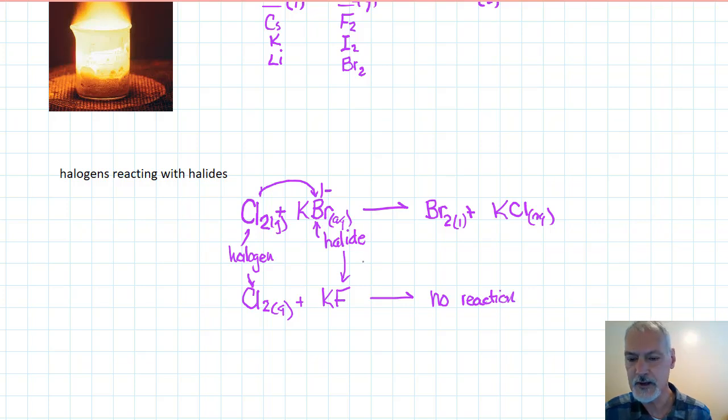Well, why is it sometimes they react and sometimes they don't react? The secret is to look at something called the electronegativity. You might recall that at the top of the periodic table: fluorine, chlorine, bromine, iodine. As we move up this way, the electronegativity increases.